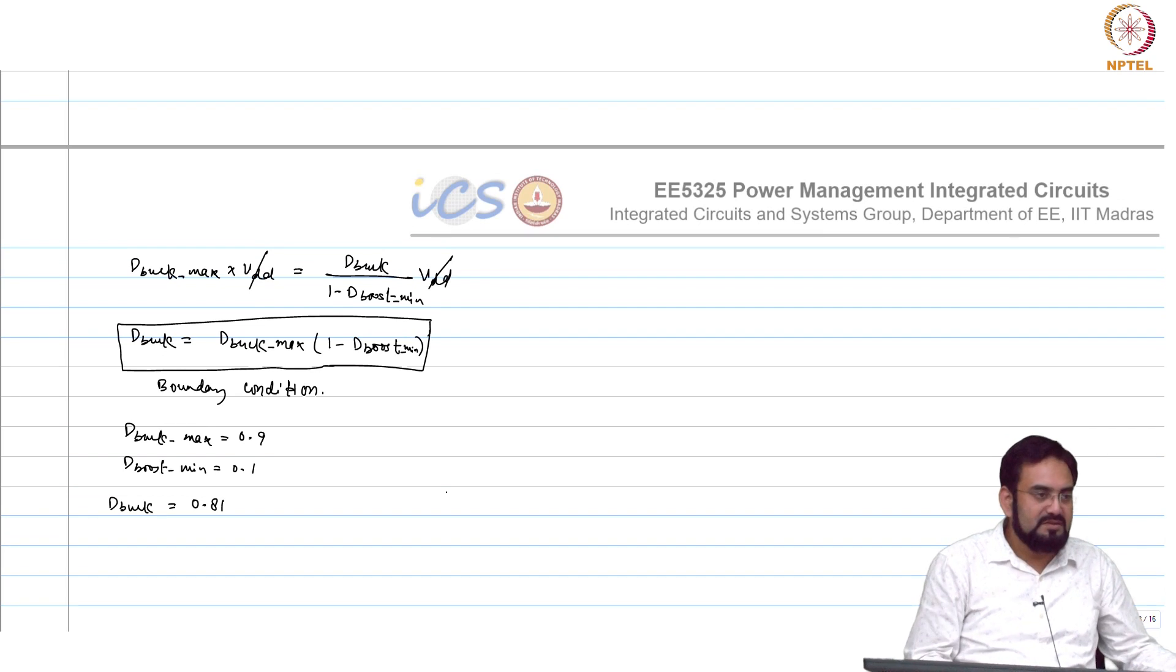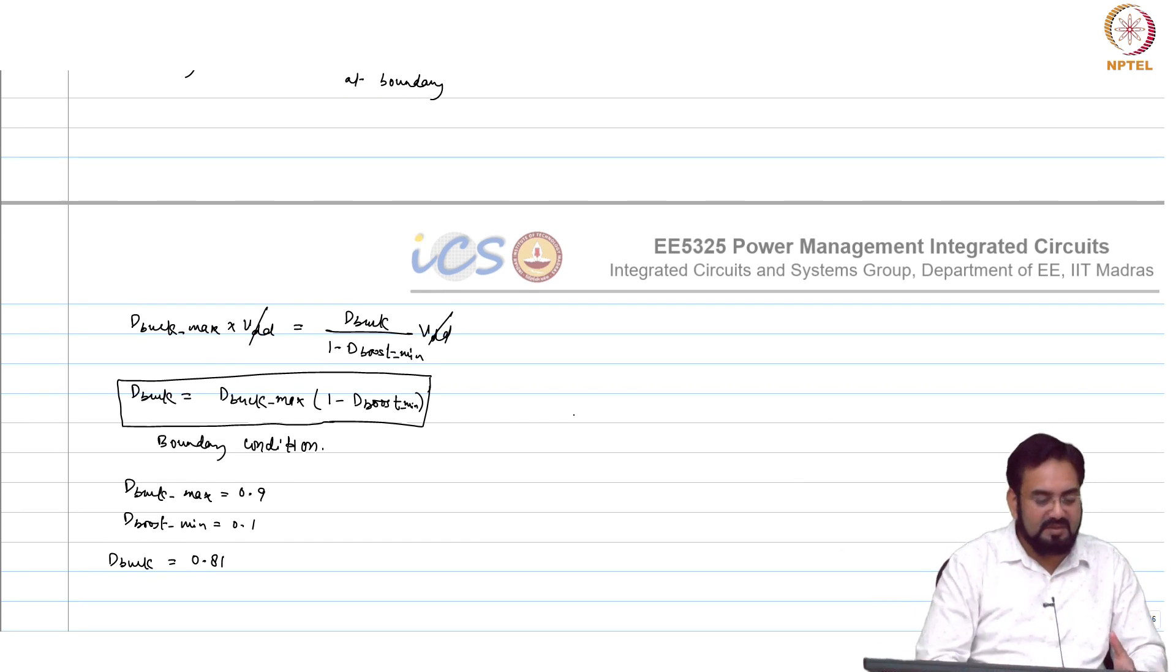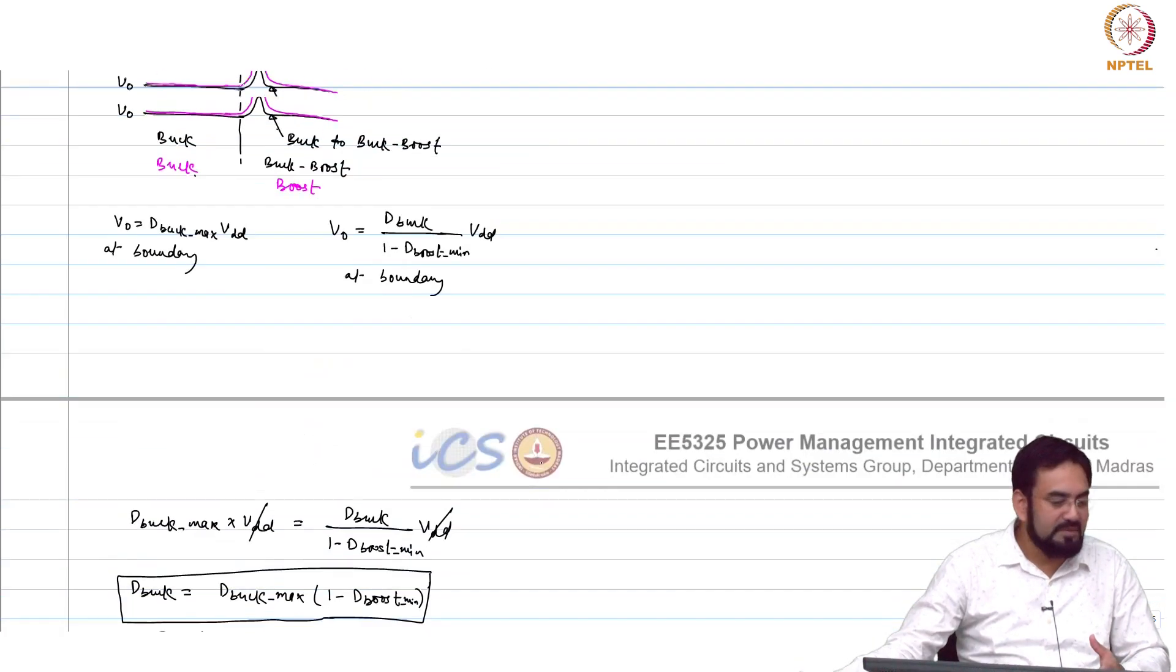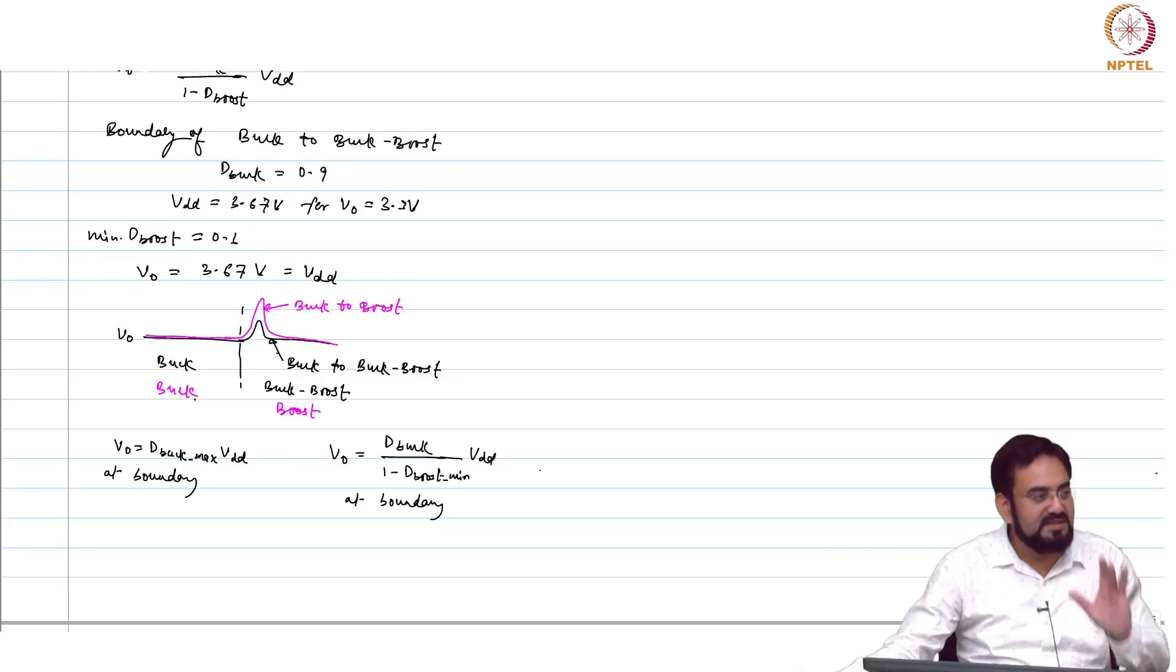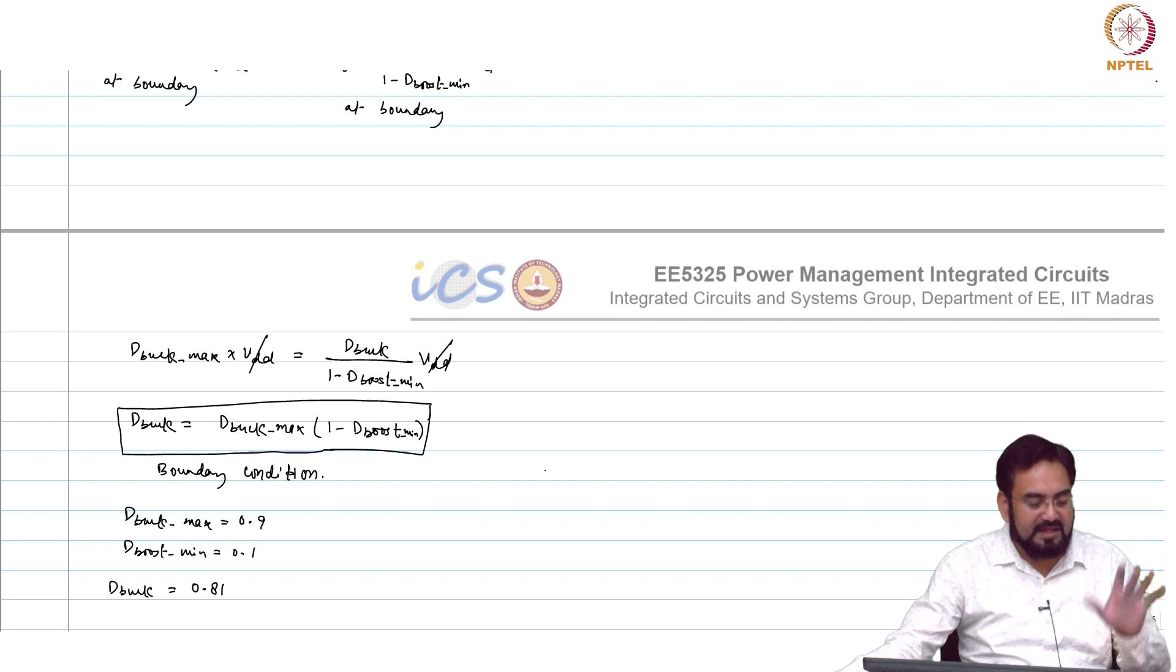Buck and boost is simple you know how to do it, but in the buck boost you require both the duty cycles. You have only one control voltage and you have to generate both duty cycle. I know this is my boundary condition. When I am my duty cycle buck duty cycle is saturated to 0.9, if I jump directly to buck boost I will see this kind of jump, that is clear. Now in order to fix that at a boundary condition when I start my both buck and boost, I have to reduce the buck duty cycle to 0.8 correct.